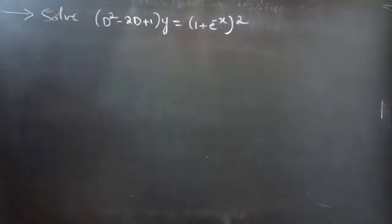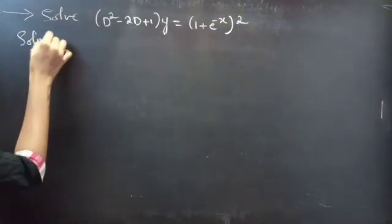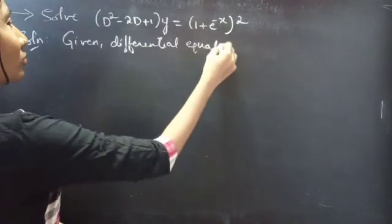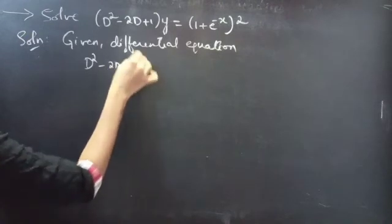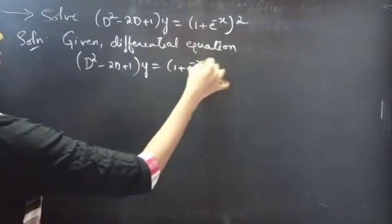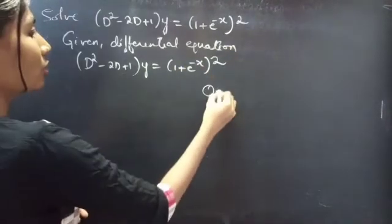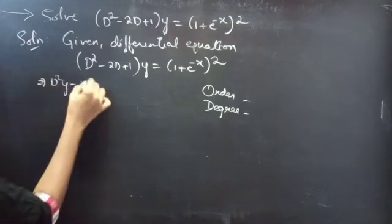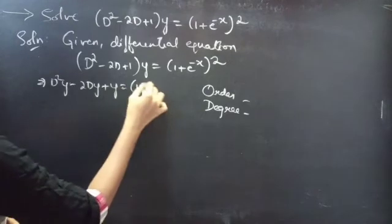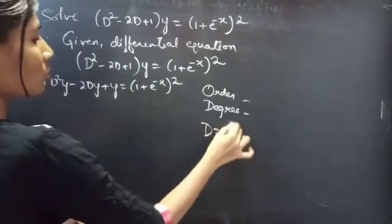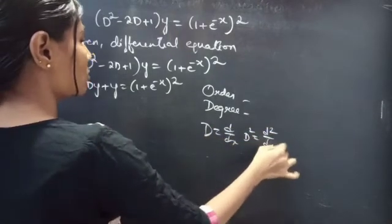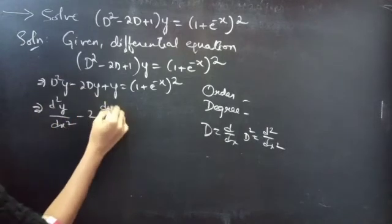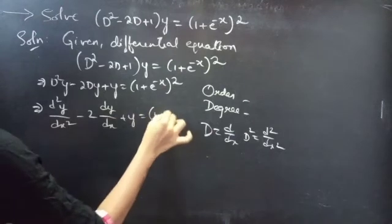Solution: given differential equation is (D² - 2D + 1)y = (1 + e^(-x))². Let's find the order and degree. We can write the equation as D²y - 2Dy + y = (1 + e^(-x))². Since the differential operator D equals d/dx, then D² equals d²/dx², we can write this as d²y/dx² - 2(dy/dx) + y = (1 + e^(-x))².